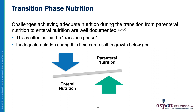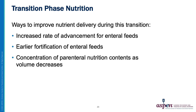While enteral feeds are advancing, parenteral nutrition is often being weaned. There are well-documented challenges in achieving adequate nutrition during the transition from parenteral to enteral nutrition, often called the transition phase. Inadequate nutrition during this time can result in growth below the expected goal. Strategies to improve nutrient delivery include increasing the rate of enteral feeding advancement, earlier fortification of enteral feeds, and concentrating the parenteral nutrition as much as possible as its volume decreases to maximize nutrient delivery.